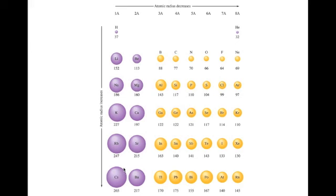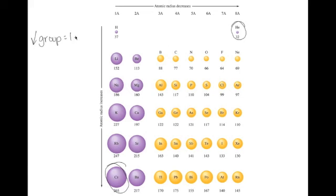This is the trend — we're going to leave out the transition metals because they don't exactly follow the rules. This is the trend of the representative elements: groups 1, 2, and then 13 through 18. You can see that the smallest element is up here at helium and the largest is down here at cesium. As you go down a group, the atoms get larger, because of increased energy levels.